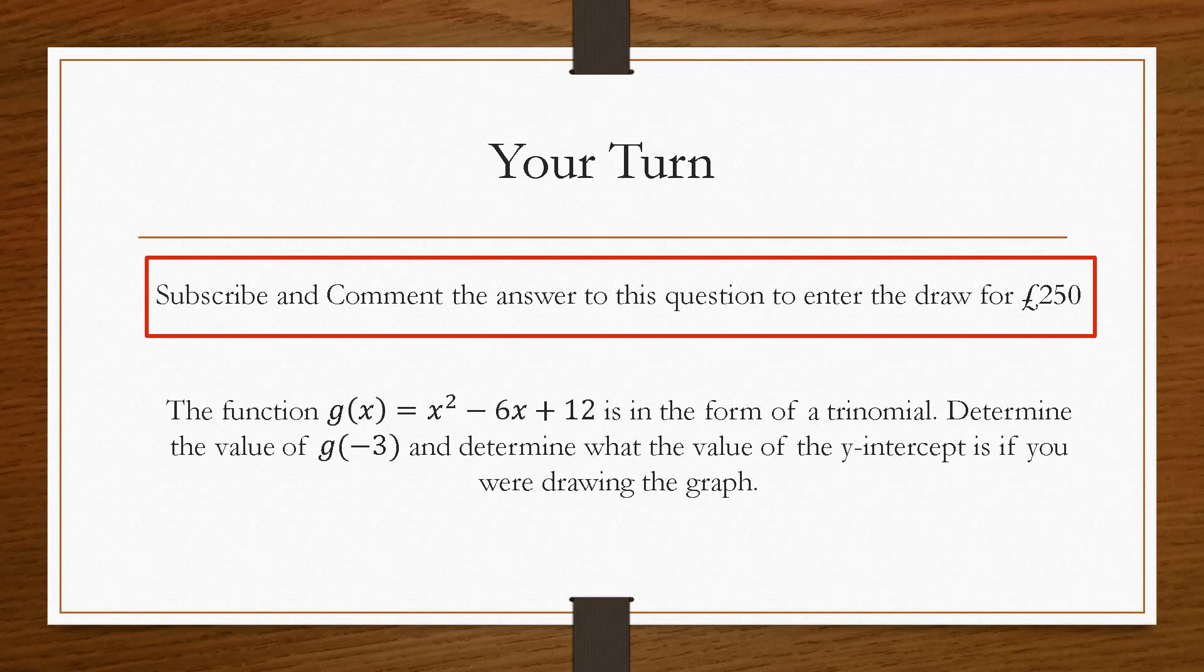So this question gives us a function g of x, which is x squared minus 6x plus 12. And it's in the form of a trinomial. And we need to determine the value of g of minus 3 and then determine what the value of the y-intercept is if we were going to draw the graph. Now, we don't want you to draw the graph. We simply want to know what the value of g of minus 3 is and then what the value of the y-intercept is, just the y value.